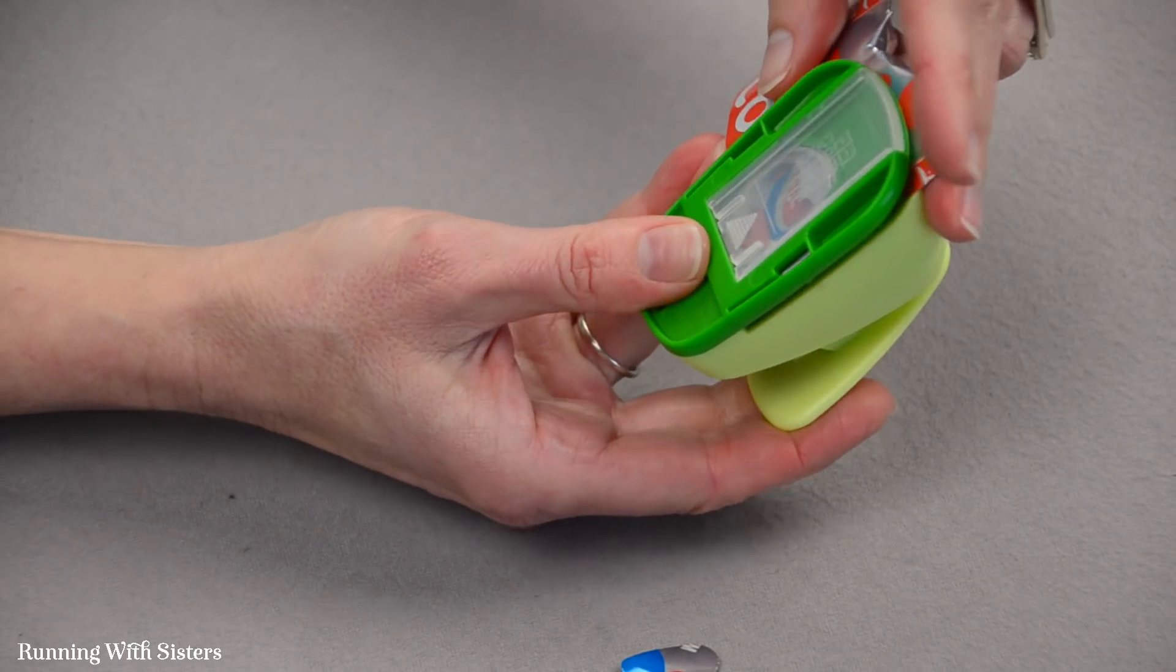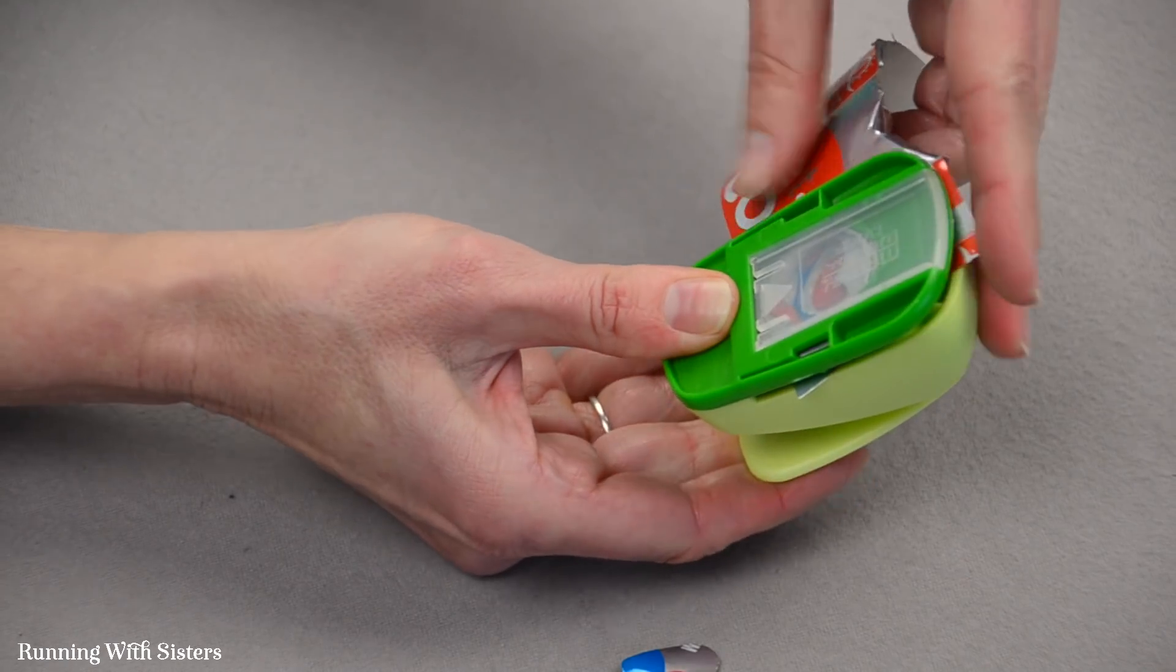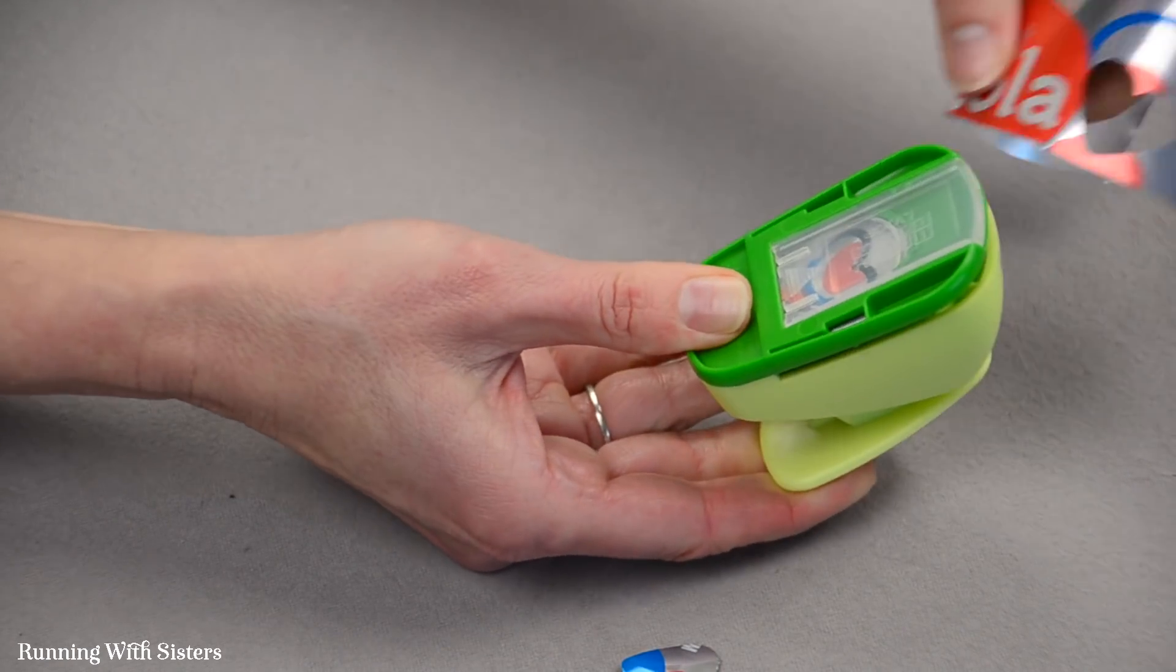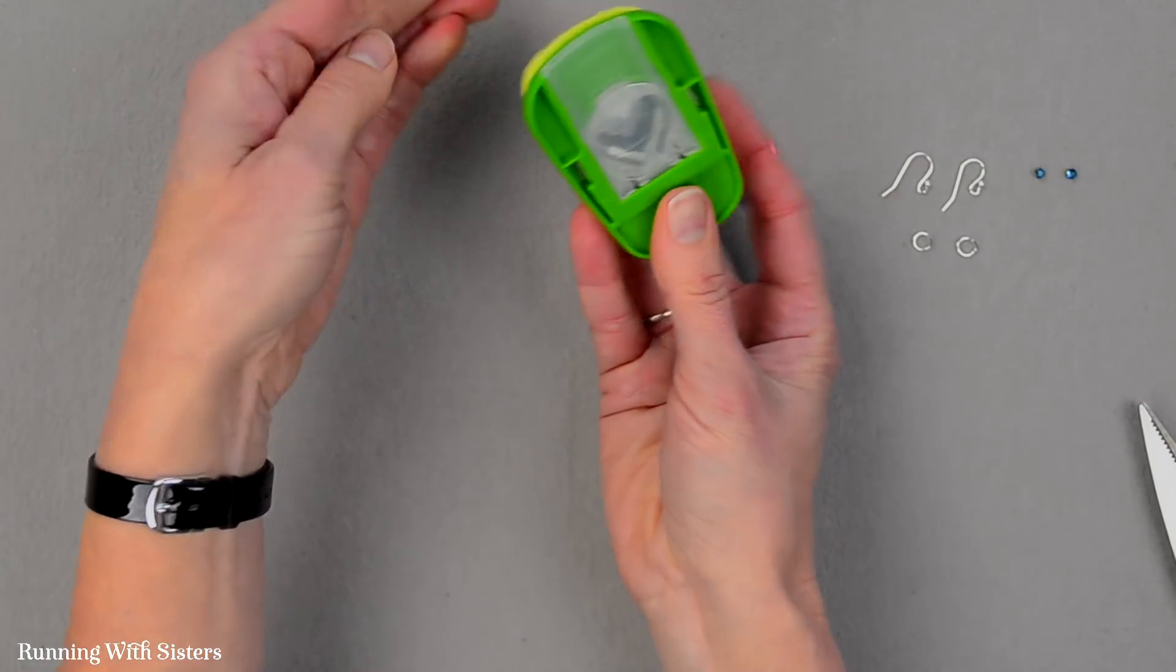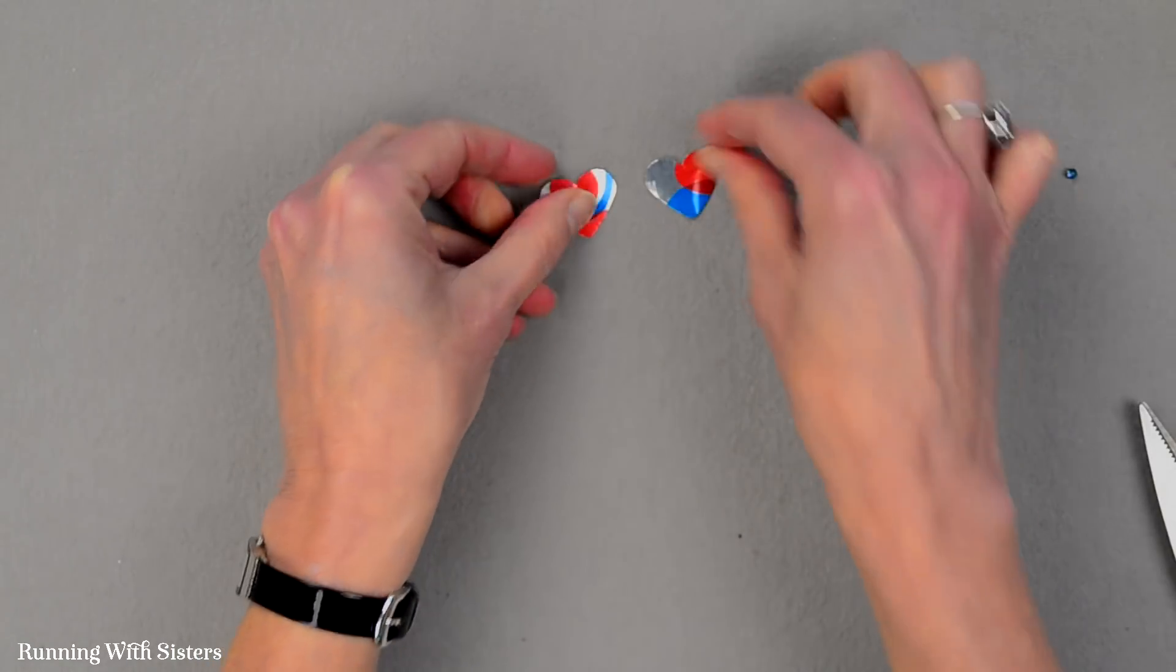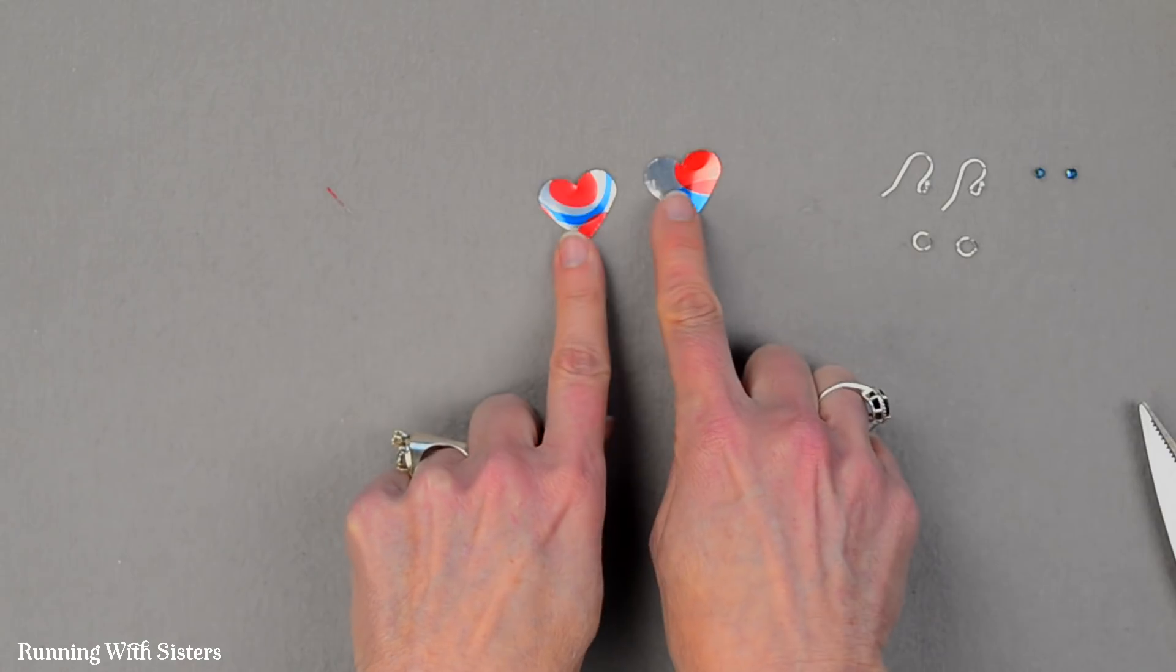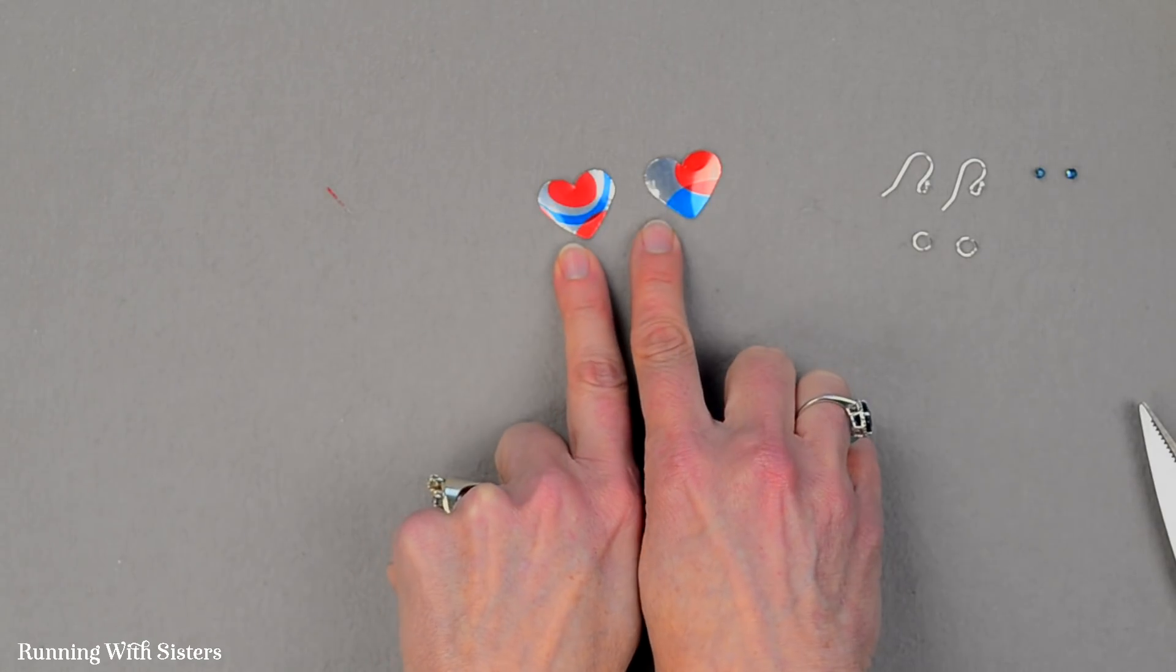So again I'm just going to move it around until I like my composition. That looks fun. I'm going to punch again. Pop my little heart out like that. And there are my two little hearts that I'm going to turn into earrings. And I like that they're a little bit different from each other. And I love that I've got a little bit of color on each one.